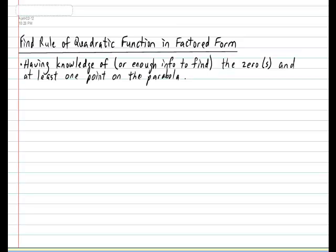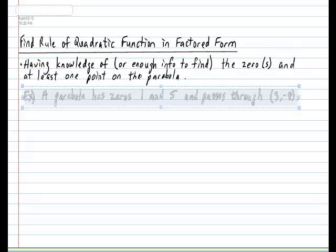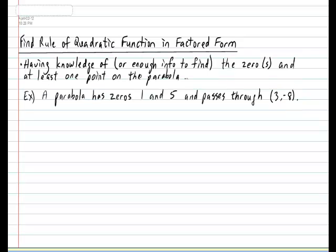The easiest way to illustrate the procedure in finding the rule of a parabola in factored form is to go through an example. So in your notebook please put example and put the following question: A parabola has the zeros located at 1 and 5 and passes through the point (3, -8). Find its rule.